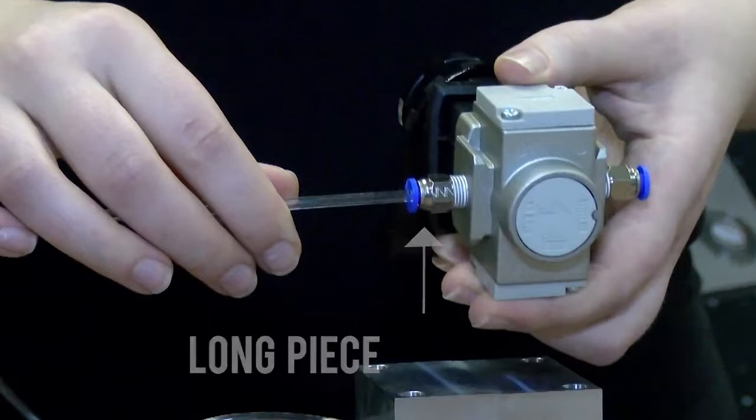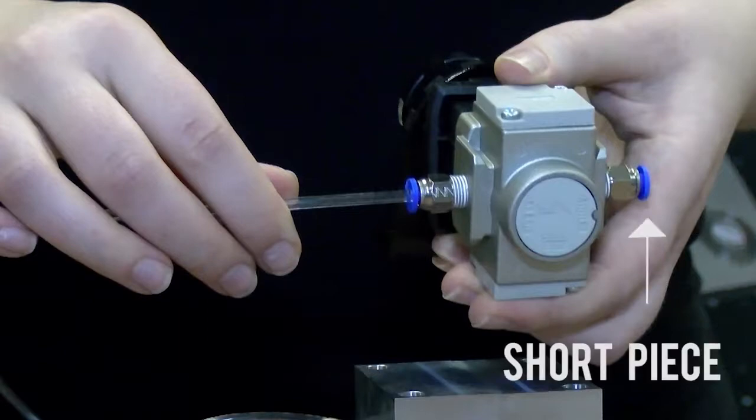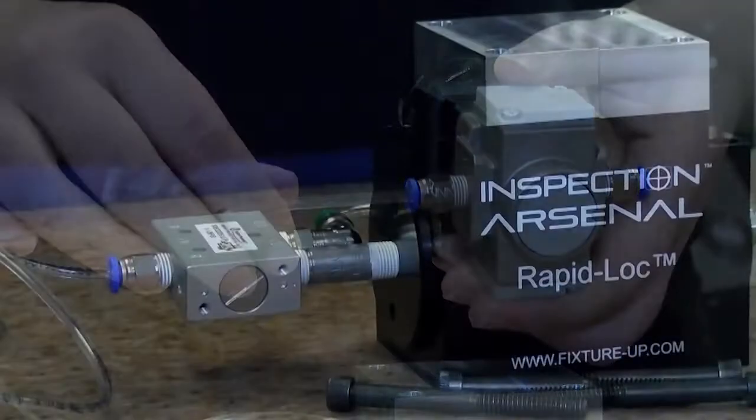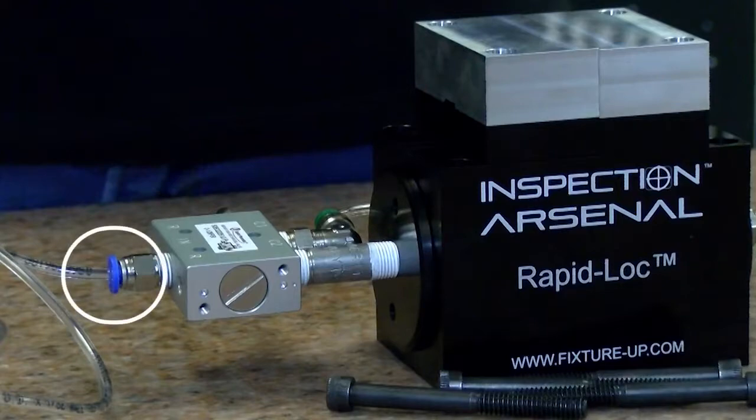Connect the long piece in the in-port. Connect the short piece to the end of the arrow or the out-port. The other end of this tubing will connect to the blue push-fit on the 5-way valve.